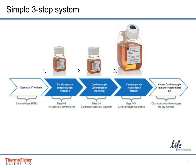Step one: after splitting pluripotent stem cells and achieving required cell confluence, change medium to Cardiomyocyte Differentiation Medium A for two days. Step two: at day two, replace Cardiomyocyte Differentiation Medium A with Cardiomyocyte Differentiation Medium B, with no washing required.